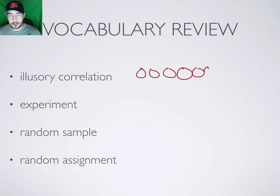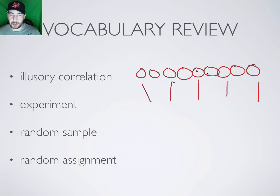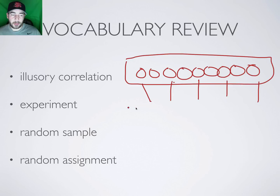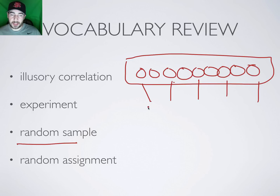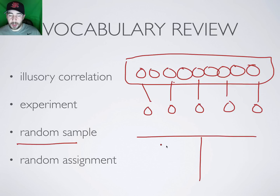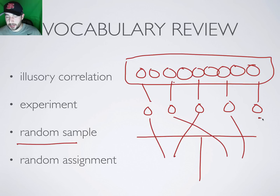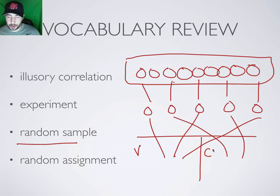Random sample: if I have a group of people, I might take every second or third person. That's my random sample from the population. Once you have that random sample, you randomly assign those people to two groups — one group receives the variable being tested, and the other is the control group that doesn't receive anything. You can't randomly assign people to groups without first having a sample.